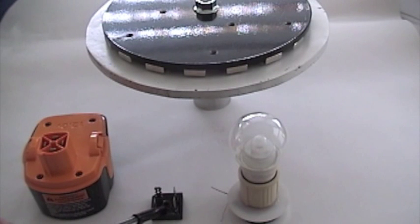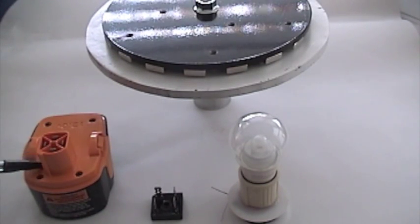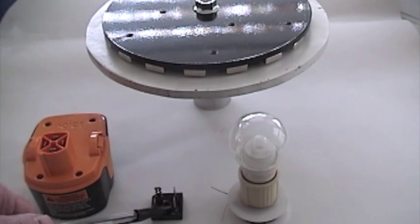Batteries are direct current, DC. So to get alternating current to charge a DC battery, we have to go through a rectifier.